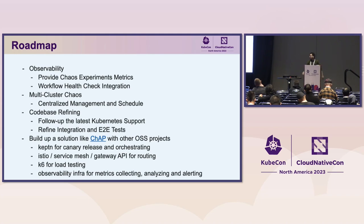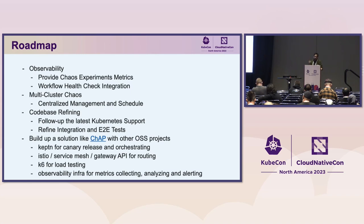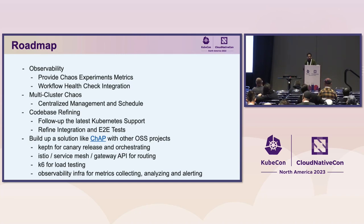There are a lot of future possibilities with Chaos Mesh. This is the direction the project is heading, and they are also looking for more contributors so these things can happen faster. As we move towards exploring challenging opportunities for building CHAP-like solutions — the Chaos Automation Platform integrating different tooling — more contributors will be needed. That's pretty much it for this session. Thank you so much for coming — I'll be around for Q&A.